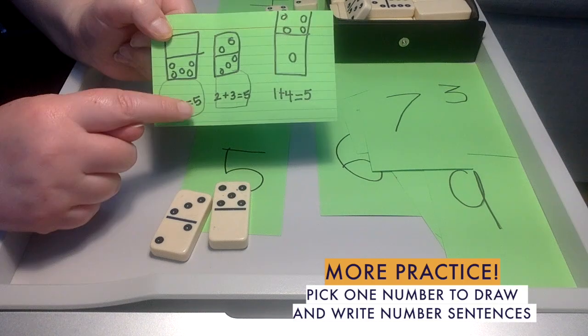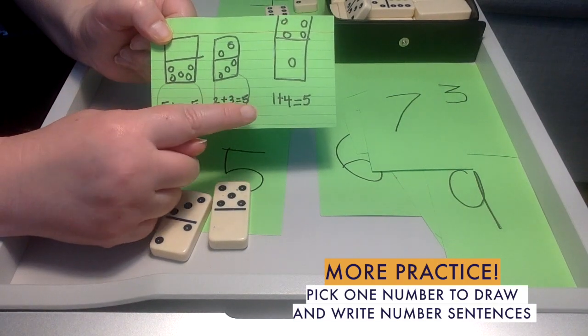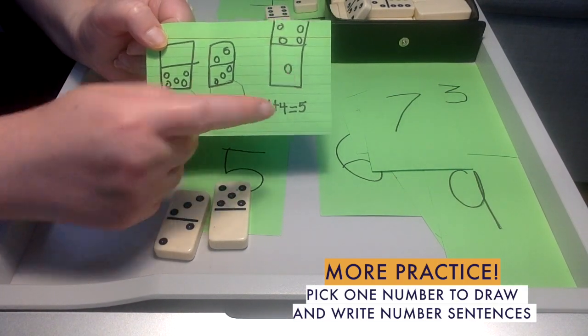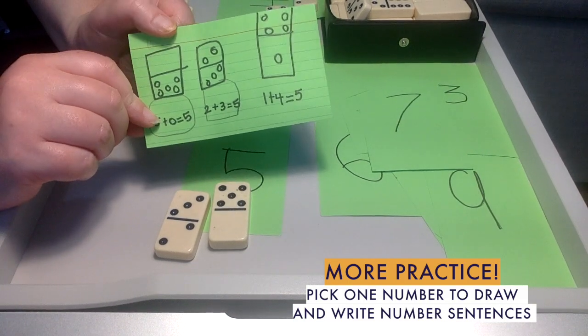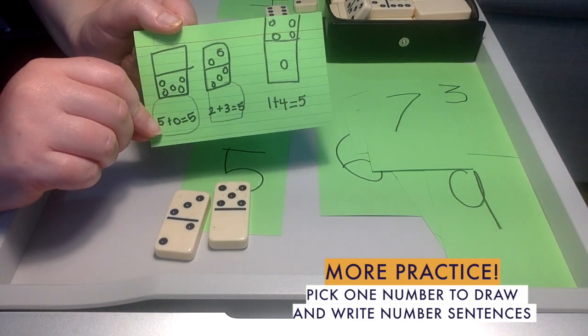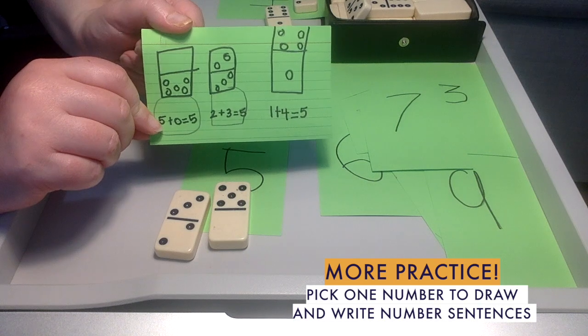So 5 plus 0 equals 5, 2 plus 3 equals 5, and 1 plus 4 equals 5, and she drew all the pictures, and that was just a way to reinforce all the ways you could make 5, and that's a way you could follow up on this game.